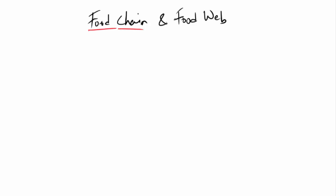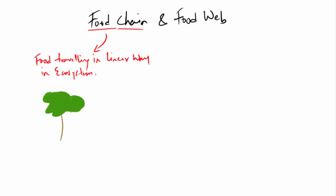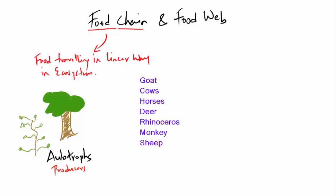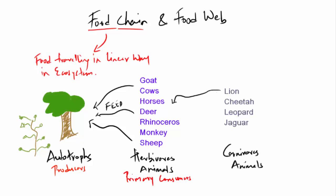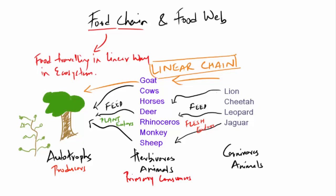Let's understand what is a food chain. It is a straight single pathway through which food energy travels in the ecosystem. Trees and plants are basically known as autotrophs or producers. Then come herbivorous animals who feed on plants and trees for energy and food — they are also called primary consumers. Then come carnivorous animals who feed on the herbivorous animals for food and energy. Like this, it forms a linear straight chain wherein one organism is eating another organism for food and energy.